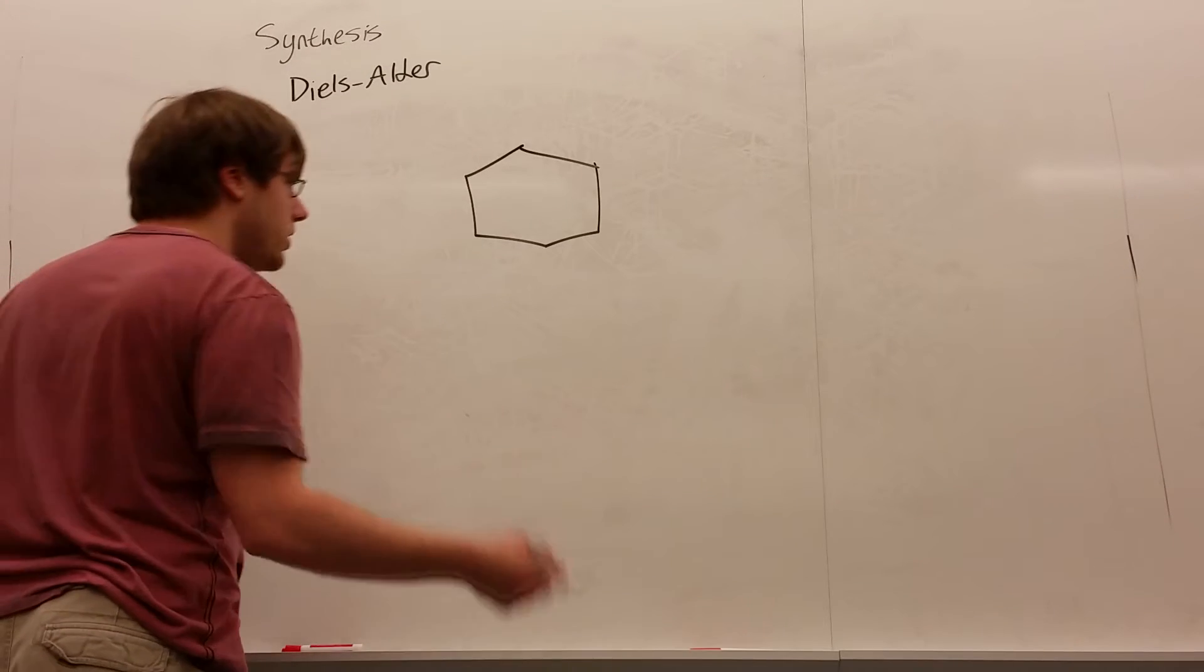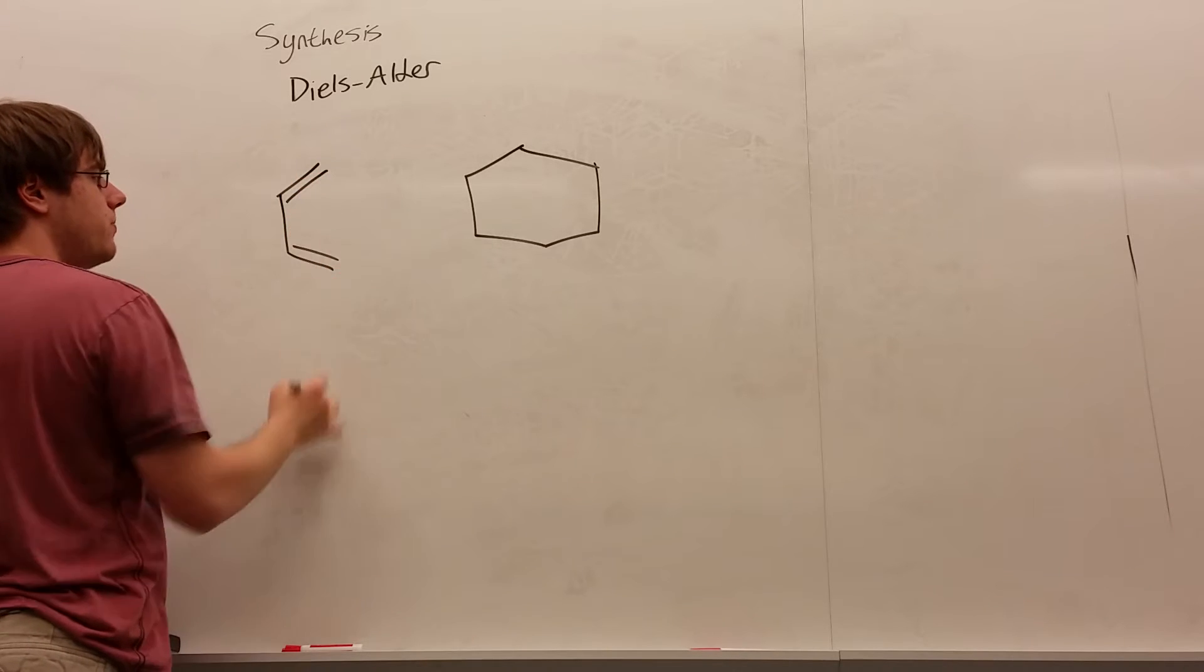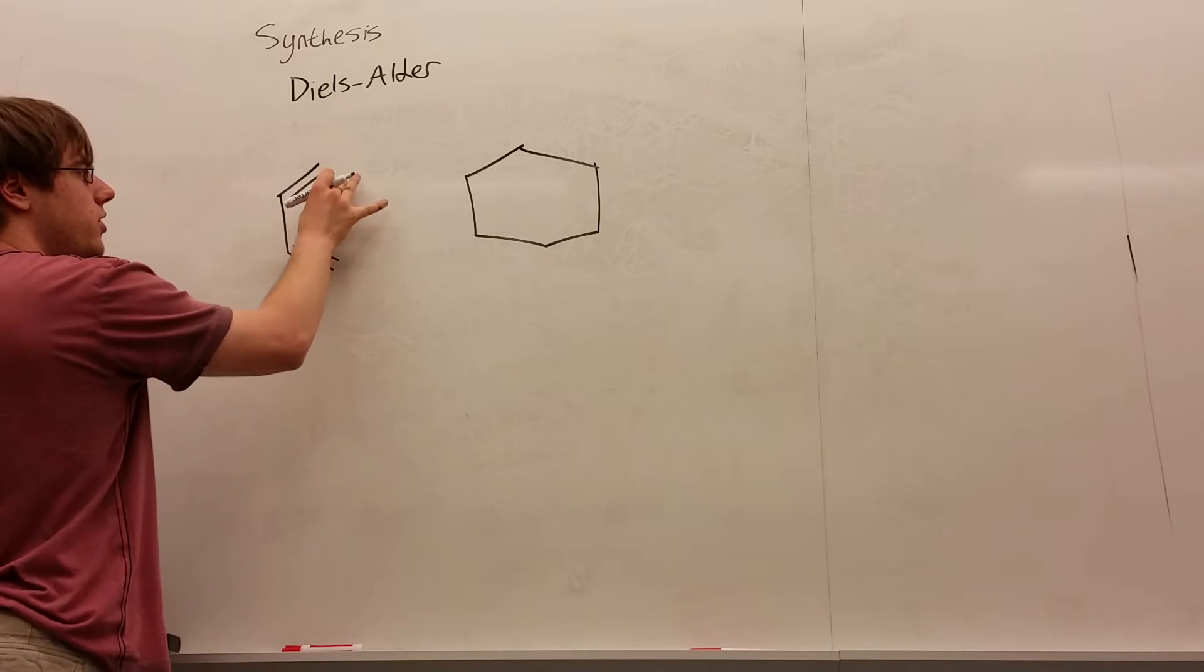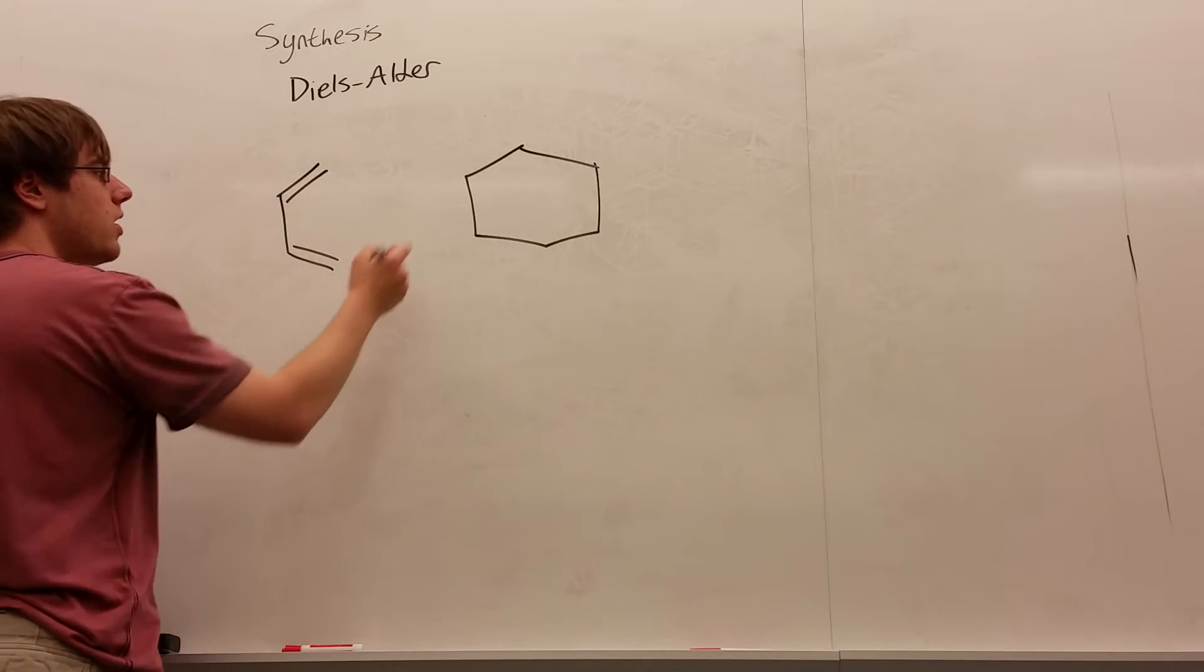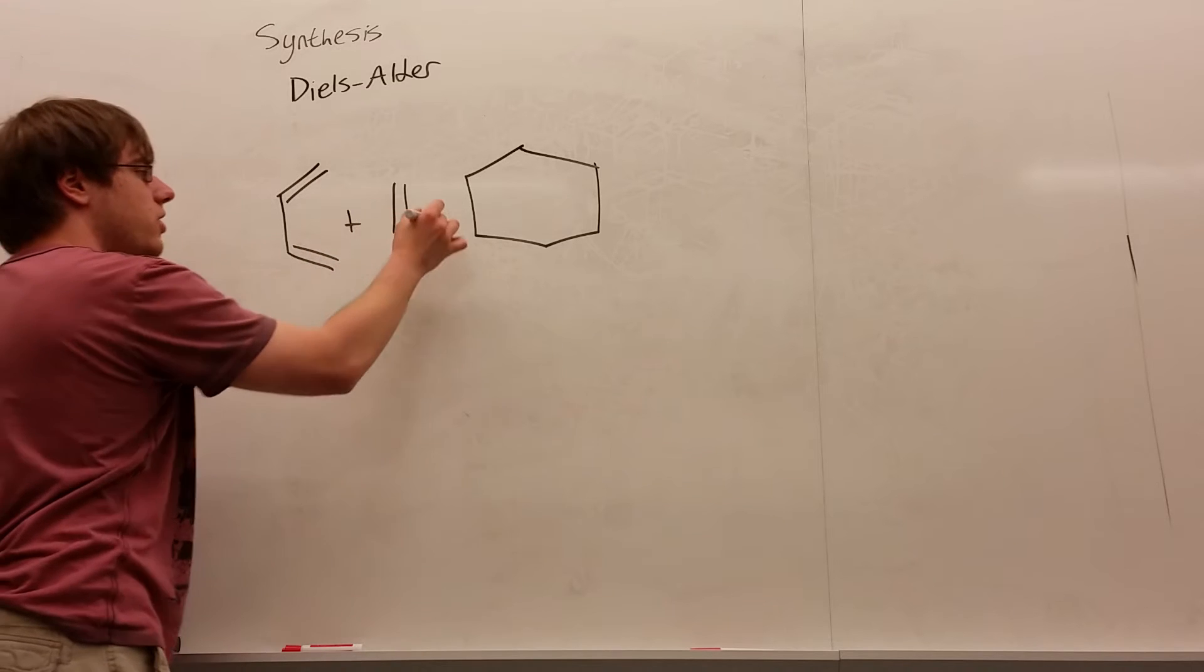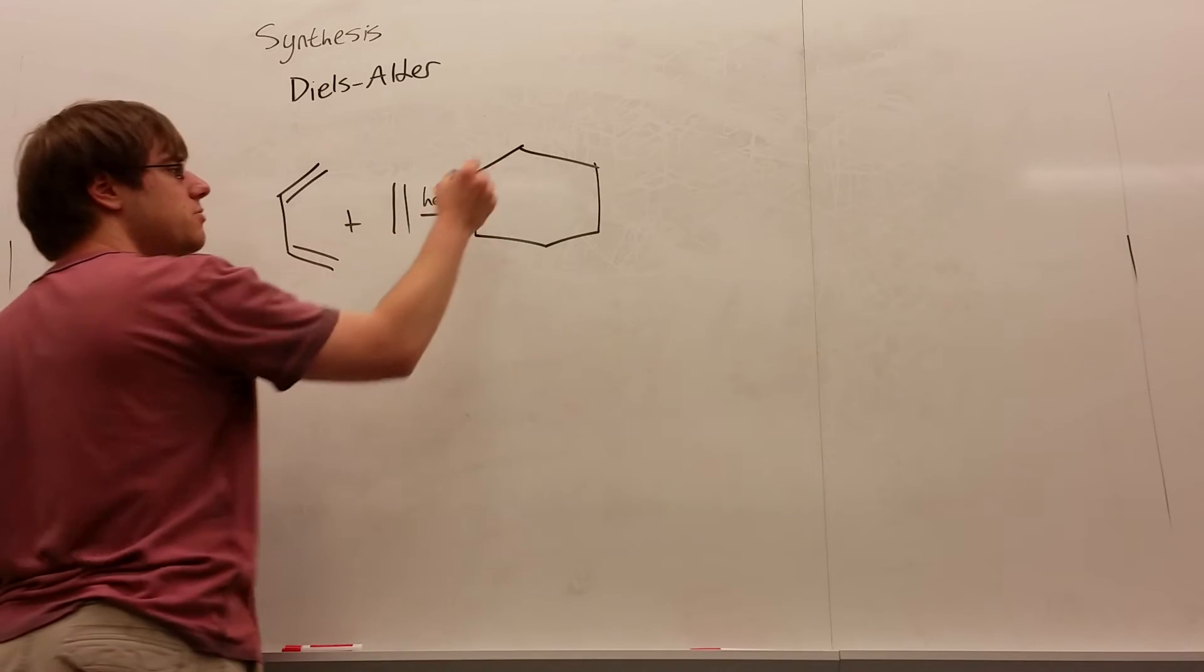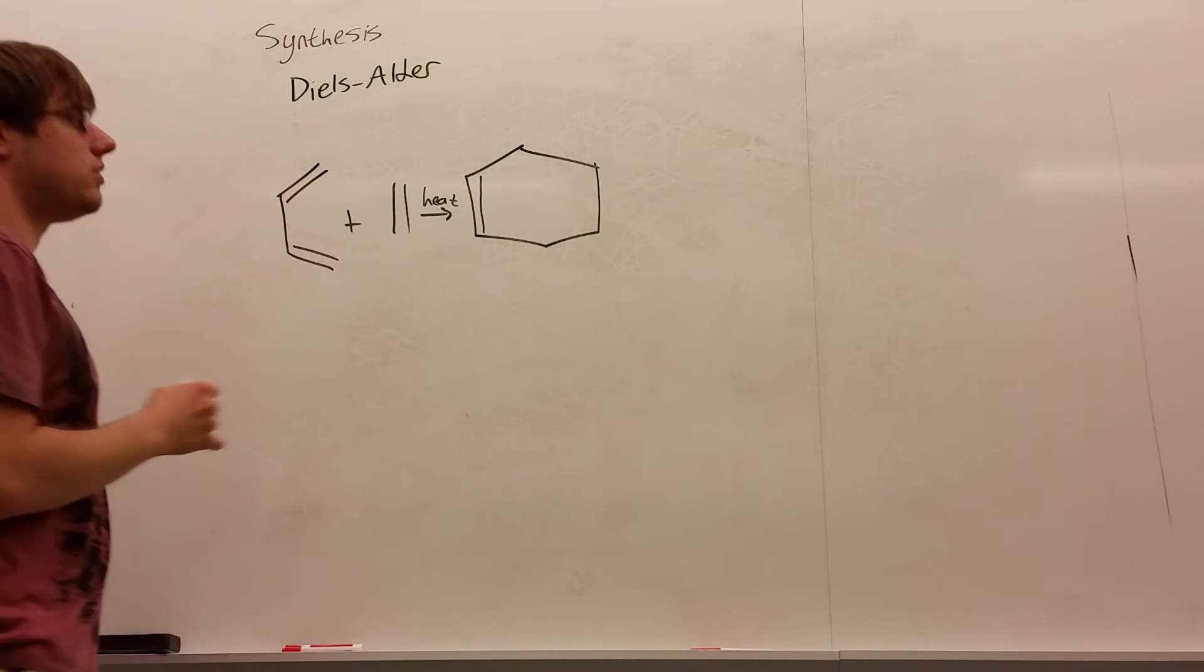Now let's remember what we do to make that six-membered ring. We take a diene, which is four carbons with two double bonds, a single bond apart, and then a carbon-carbon double bond like that. We mix them together with heat, and that will give you a six-membered ring with one double bond inside of it.